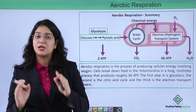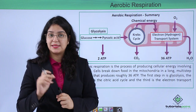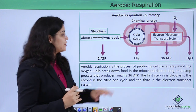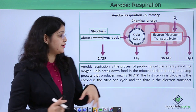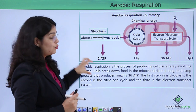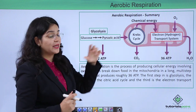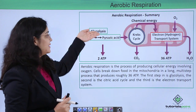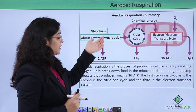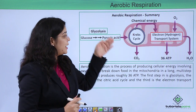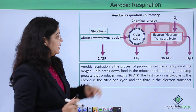When your muscles need energy for contraction, the glucose in your muscle converts into pyruvic acid through a process called glycolysis. When pyruvic acid is formed, it produces 2 ATP, and this pyruvic acid then enters into the mitochondria.